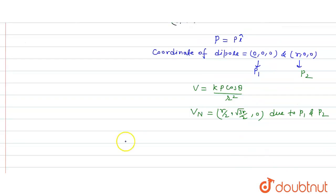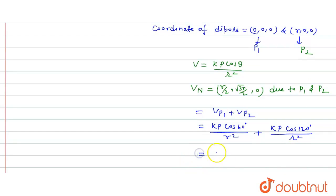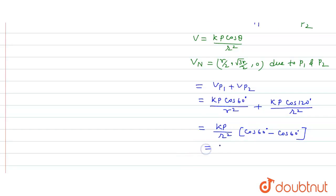The electric potential at point N — located at (r/2, √3r/2, 0) — is due to both dipole p1 and dipole p2. So V at N equals V_p1 plus V_p2, which equals k·p·cos60° / r² + k·p·cos120° / r². Factoring out k·p/r², we get cos60° plus cos120°.